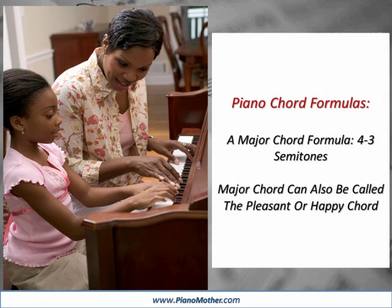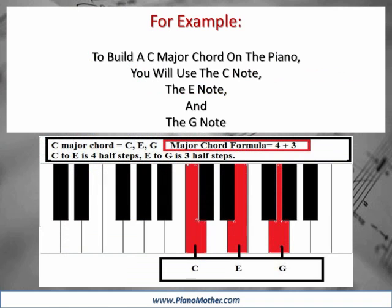Piano Chord Formulas. A major chord formula: four to three semitones. The major chord can also be called the pleasant or happy chord. For example, to build a C major chord on the piano, you will use the C note, the E note, and the G note.